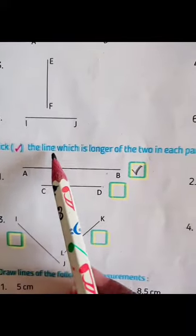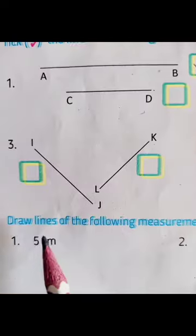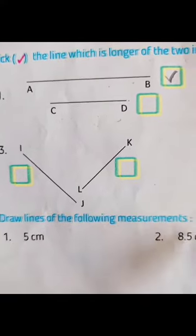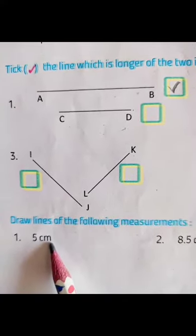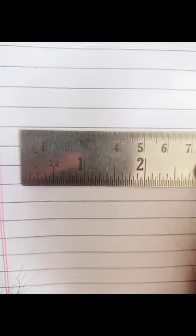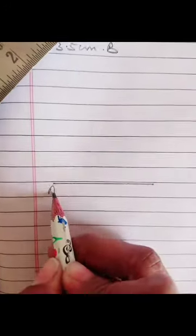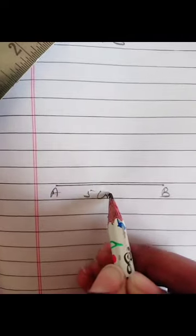In question number b, find which line is longer of the two in each part. Here AB and CD are given, so AB is longer. In question number c, draw lines of the following measurements. For 5 centimeters, place the scale and draw a line from here to here — that is your 5 centimeters. Label one end A and the other end B.